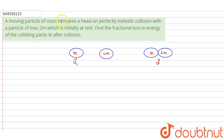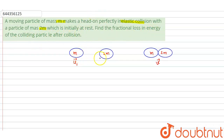Hello students, the question is: a moving particle of mass m makes a head-on perfectly inelastic collision with a particle of mass 2m which is initially at rest. Find the fractional loss in energy of the colliding particle after collision.